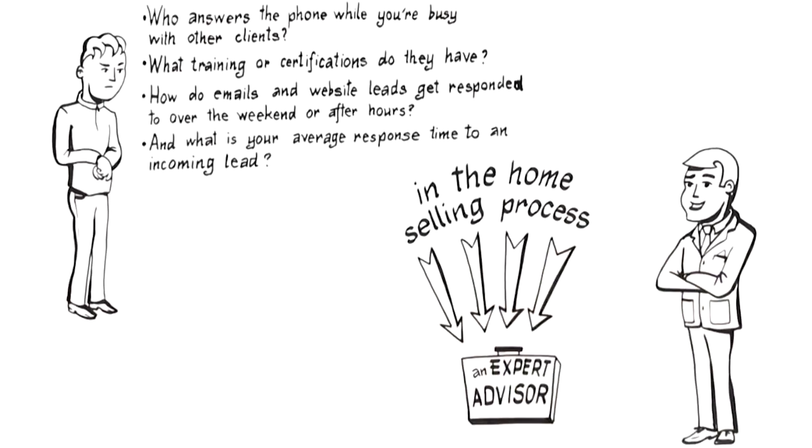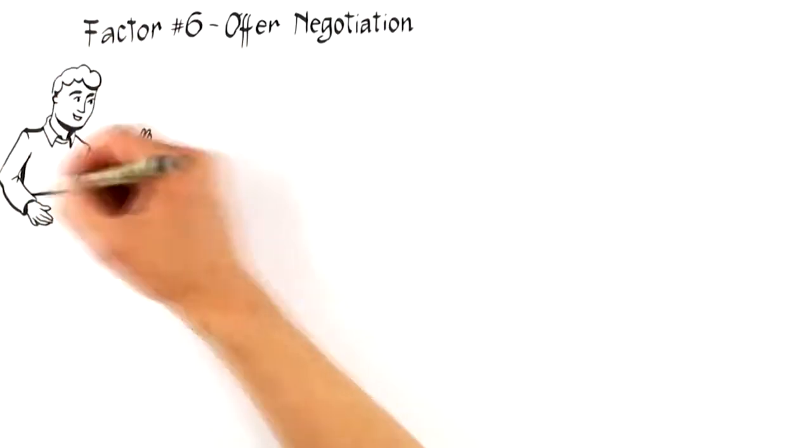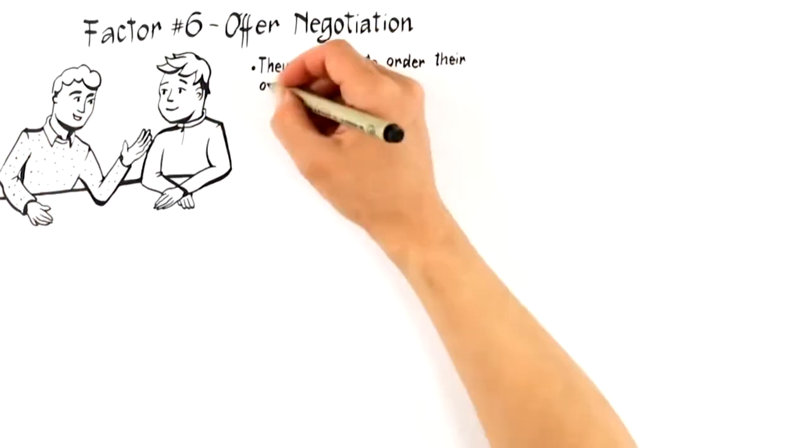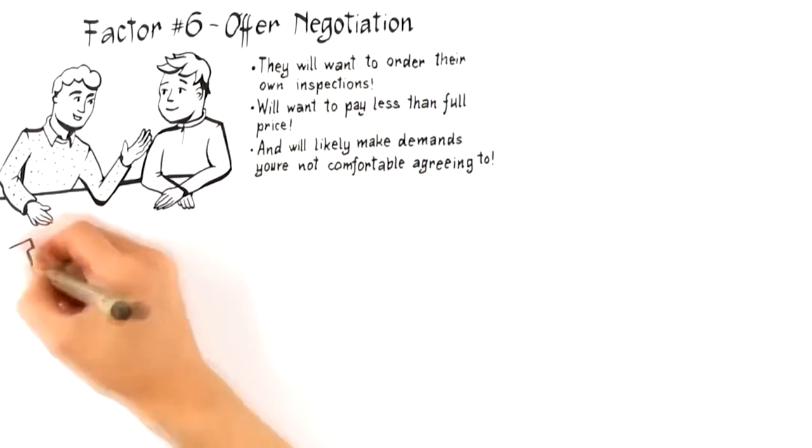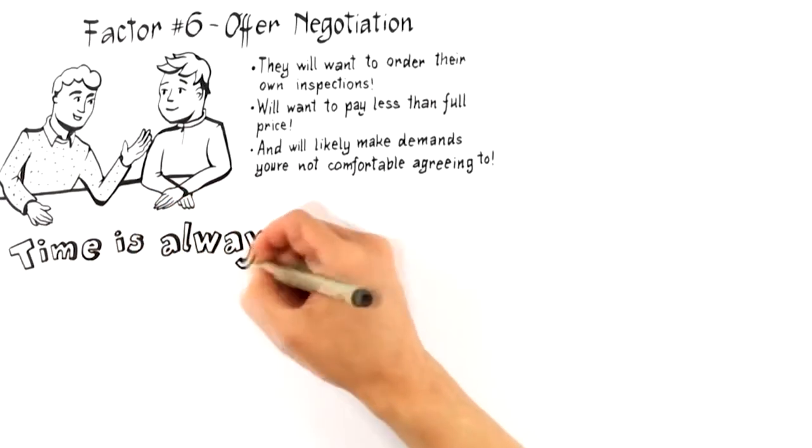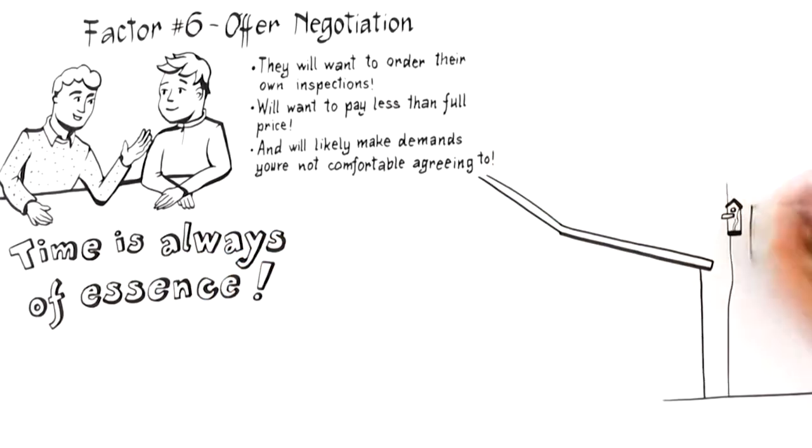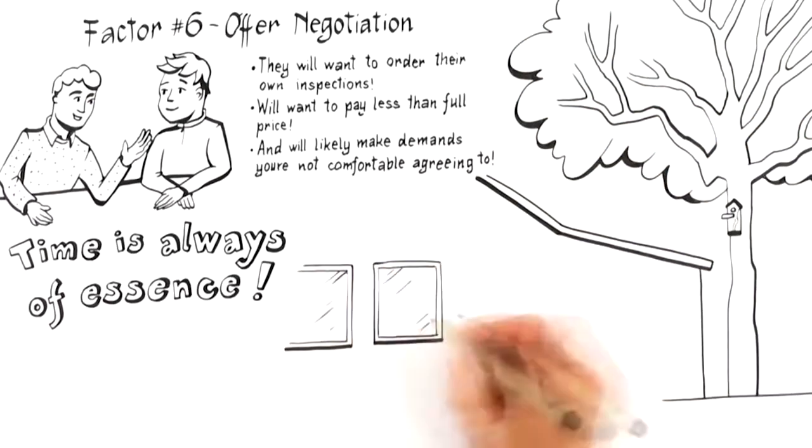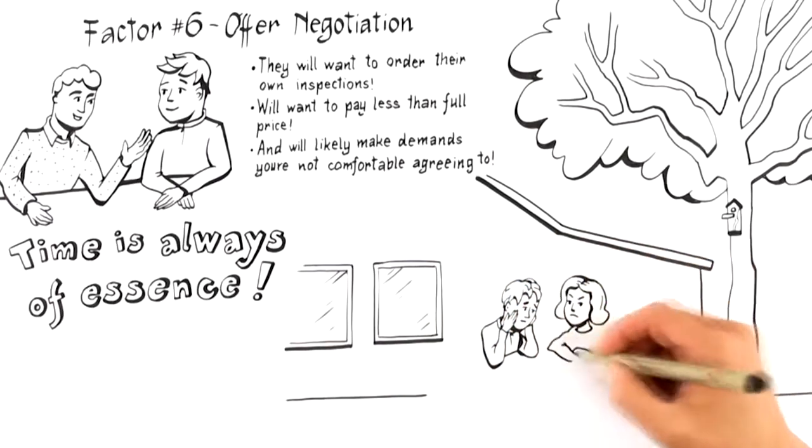Alright, the next-to-last factor that influences the likelihood you get top dollar for your home is Factor number 6, Offer negotiation. Regardless of how well a home is positioned to attract the perfect buyer, they will want to order their own inspections, will want to pay less than full price, and will likely make demands you're not comfortable agreeing to. Therefore, not enough can be said then about hiring an expert who can negotiate an outcome that serves your best interests. Too many good deals go bad, and time is always of the essence. If you lose a good deal because of bad negotiating, it could be weeks to months before another deal that good comes your way, and the market could have shifted out of your favor during that time.